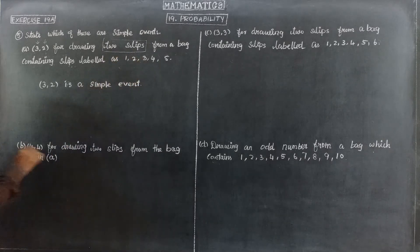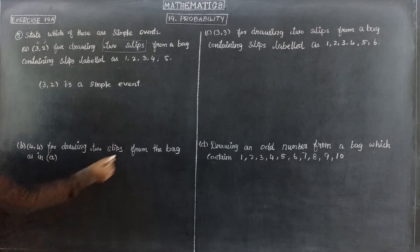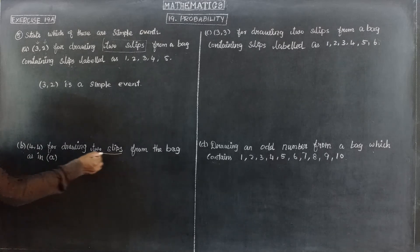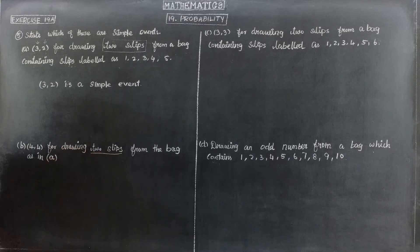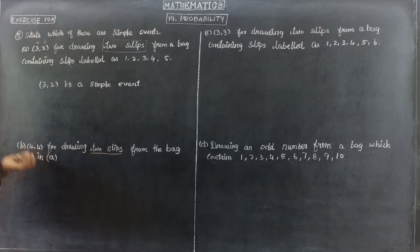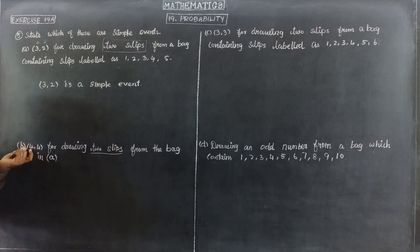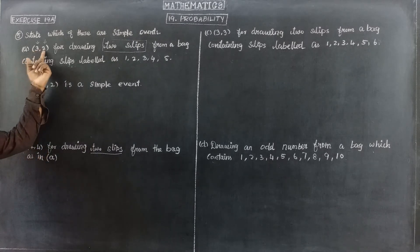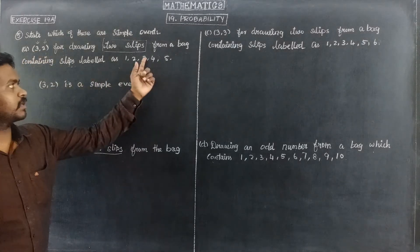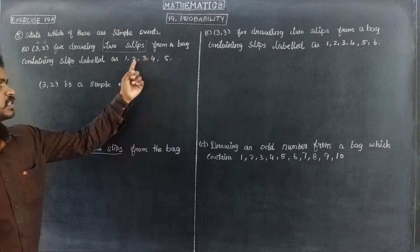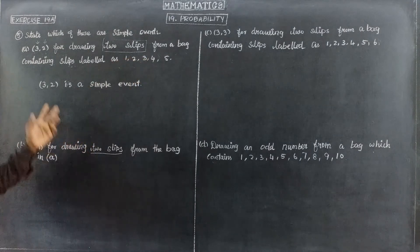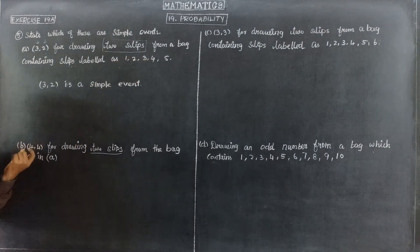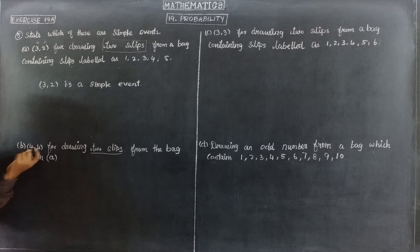So next is 4,4 - drawing 2 slips. So 4,4: first step is 4, second step is 4. So first step is 3, second step is 2. Now 1,5 is the number. Now first step is 4, second step is 4.